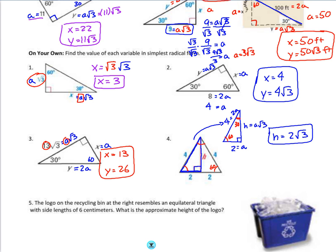Number one, you should have got x is equal to 3. And number two, you should have got x is equal to 4, y was equal to 4 root 3. And number three, x was equal to 13, and y was equal to 26.